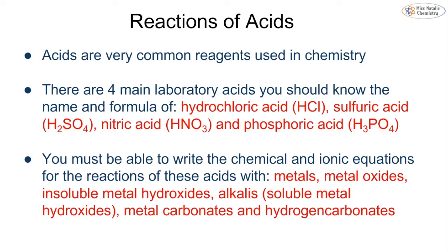Let's look at the different types of reactions. First we're going to look at reactions of acids. There are four main lab acids you need to know: hydrochloric acid (HCl), sulfuric acid (H2SO4), nitric acid (HNO3), and phosphoric acid (H3PO4). These come up throughout this course as various reagents or catalysts. You must know all the formulas and be able to write chemical and ionic equations for reactions with different types of bases: metals, metal oxides, metal hydroxides, alkalis, metal carbonates and hydrogen carbonates.